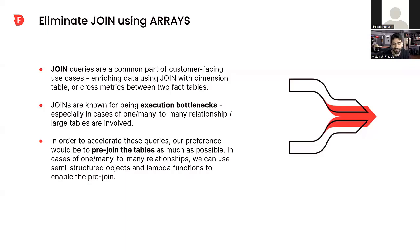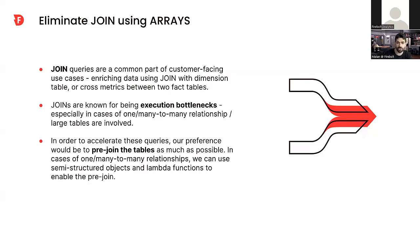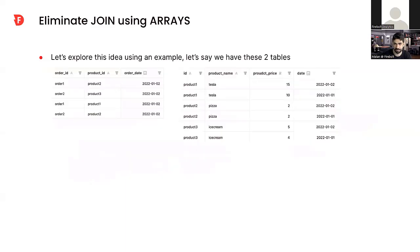What we usually do to optimize join queries in a data app scenario is pre-join the tables — flatten two tables into one — so when reading data we only scan one table, which saves quite a lot of time. The problem with pre-joining is that very often the relationship is not one-to-one. If it's one-to-many, we risk exploding our fact table, multiplying the number of records by the number of related records in the dimension table — going from a few terabytes to a few dozen terabytes. So I want to talk about how we can use arrays and semi-structured objects in combination with Lambda functions to pre-join tables more efficiently without compromising on storage.